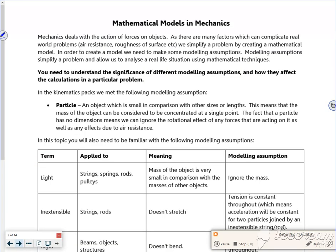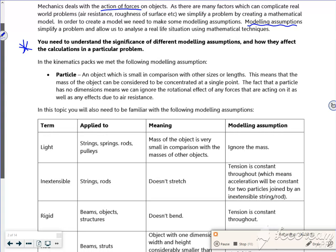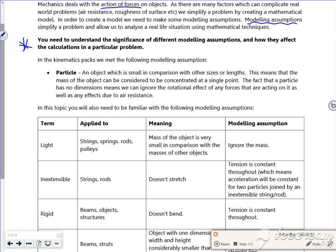Right, so let's have a look at the first page. It says mechanics deals with the actions of forces and objects. What we do is we make them easier. We have modeling assumptions that make them easier, so we might get rid of air resistance, we might ignore friction on some questions. So we need to be able to figure out what our assumptions are to make it easier.